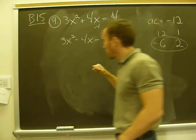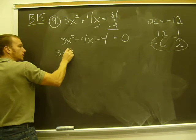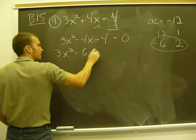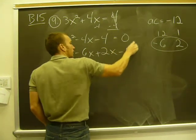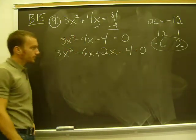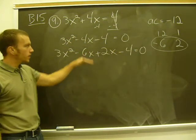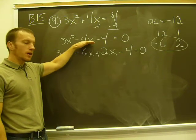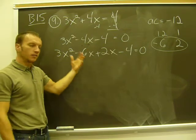So the next step is to rewrite my three terms as four terms. So 3x squared minus 6x plus 2x minus 4 equals 0. Okay, remember, the goal of that AC method is really just to rewrite the x term as 2x terms. And then I can factor by grouping.